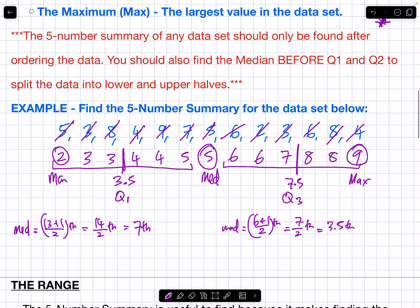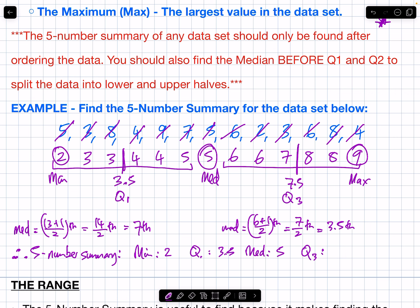The average of 3 and 4 is 3.5, so Q1 = 3.5. Therefore, the five number summary is: Min = 2, Q1 = 3.5, Median = 5, Q3 = 7.5, Max = 9.